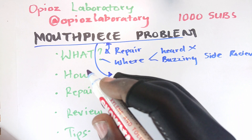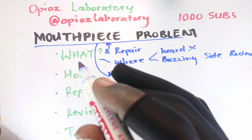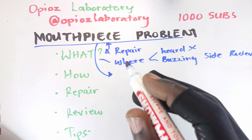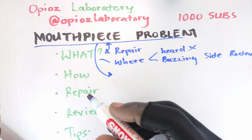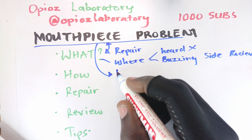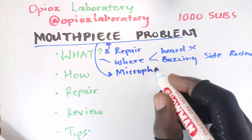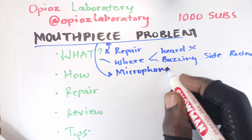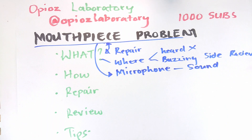Mousepiece is basically the part of the phone that is nearest to your mouth, or that picks up sound from your mouth — that's why we call it a mousepiece. But in reality it is actually a microphone, because usually it's the microphone that is supposed to pick up sound as you talk to the person, and then they hear you when the microphone has picked up that sound.